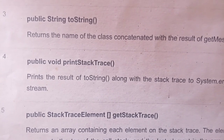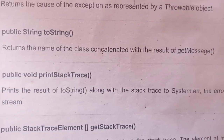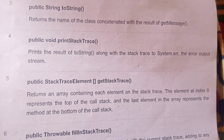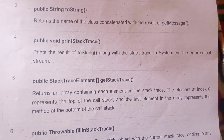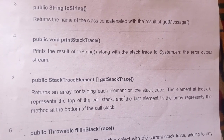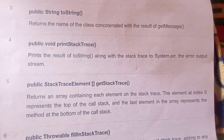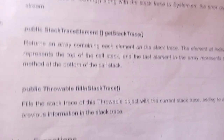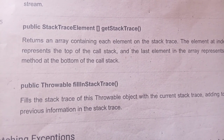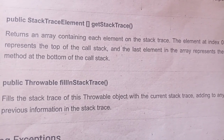Public void printStackTrace() — prints the result of toString() along with the stack trace to System.error, the error output stream. Public StackTraceElement[] getStackTrace() — returns an array containing each element on the stack trace. The element at index 0 represents the top of the call stack, and the last element in the array represents the method at the bottom of the call stack. Public Throwable fillInStackTrace() — fills the stack trace of this Throwable object with the current stack trace, adding to any previous information in the stack trace.